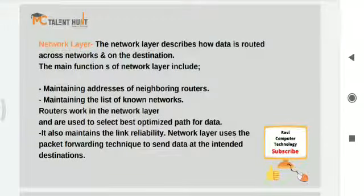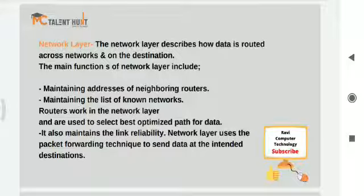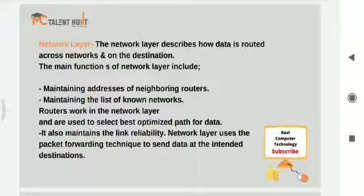The fifth one is the network layer. The network layer describes how data is routed across networks to reach the destination — which route data takes to reach another network or destination. After the transport layer, data moves to the network layer and is represented in the form of packets.